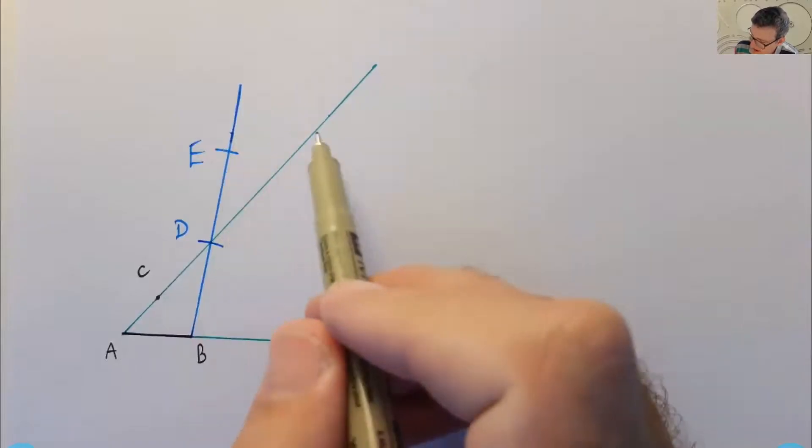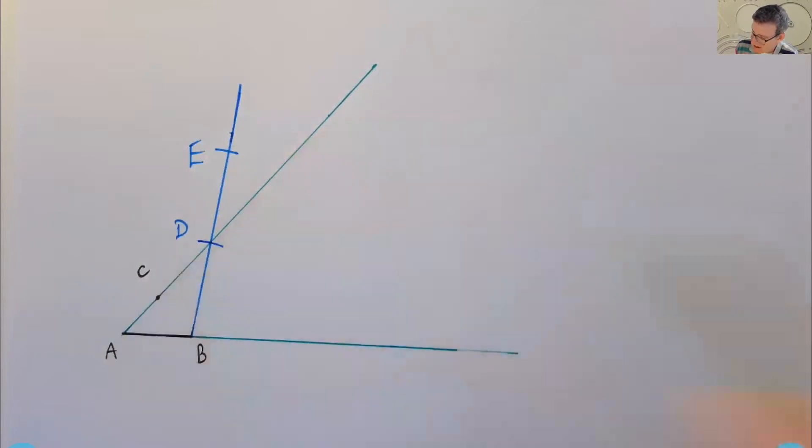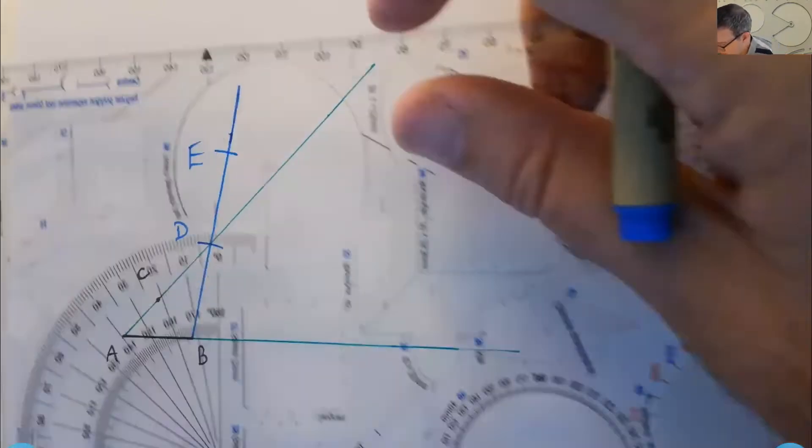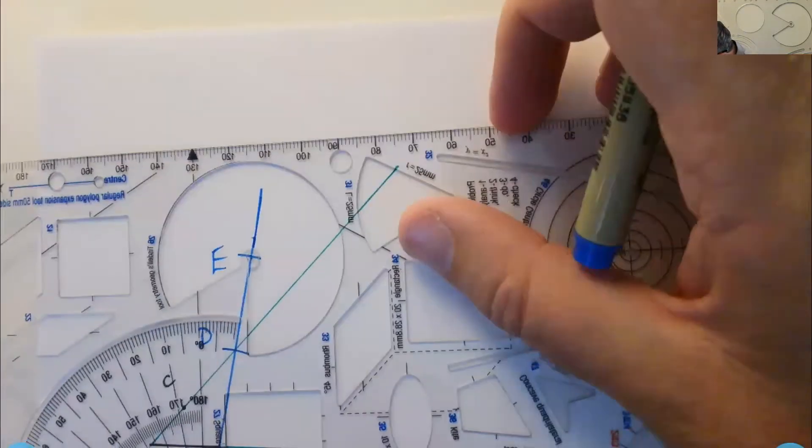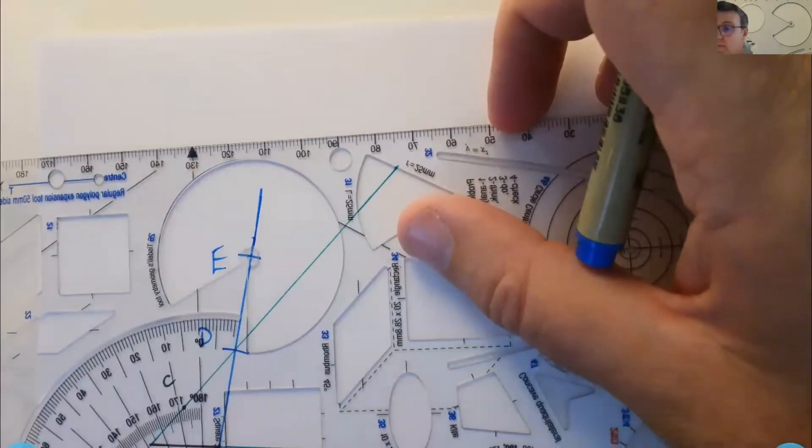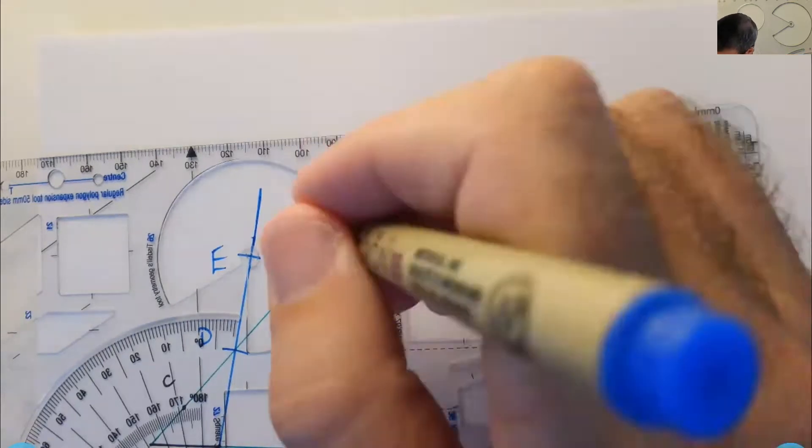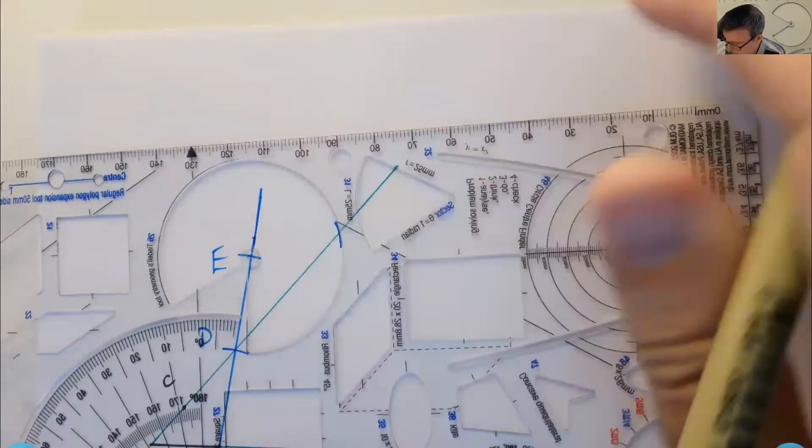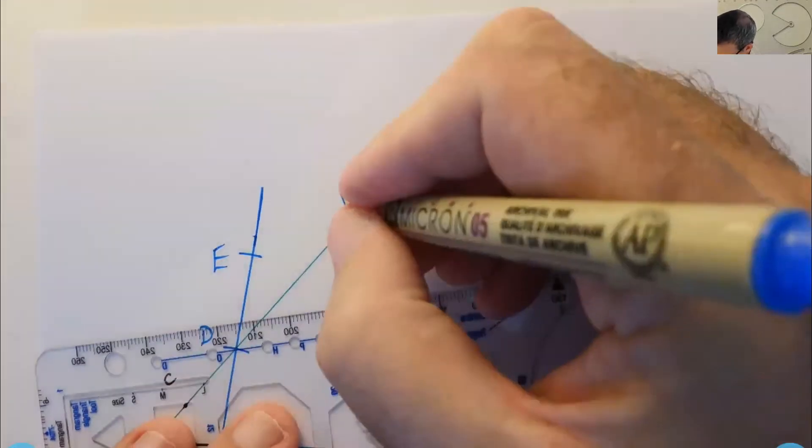And then I'll come back onto this ray, AC. So let's put that in there. I can put the center point on E. And I'm going to cut my green ray again. So let's call this F.